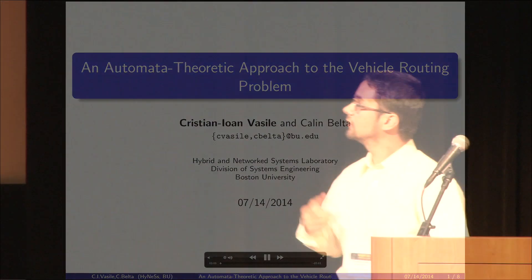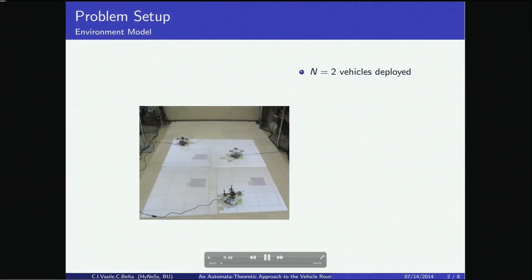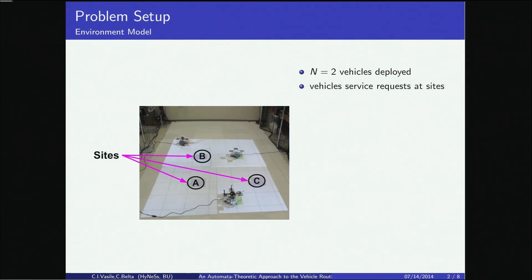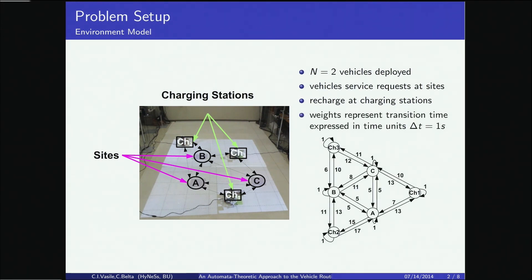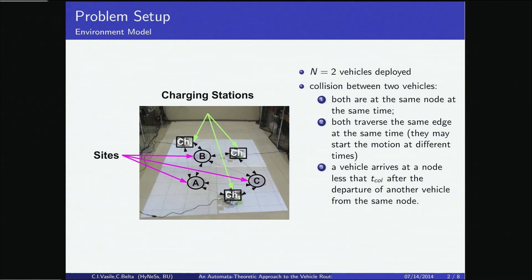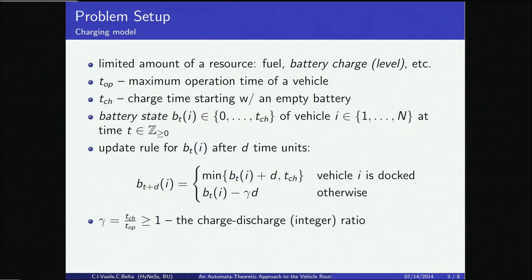My name is Christian Vasile and I will present an automata theory approach to the vehicle routing problem. Consider a mission where we deploy two robots in an environment with a number of sites and charging stations, where the robots can move between the charging stations and the sites. We extract a transition system where the weights represent travel times between nodes, and we define collision between vehicles when two vehicles are at the same node, traversing the same edge, or a vehicle arrives at a node less than epsilon seconds after another vehicle's departure.